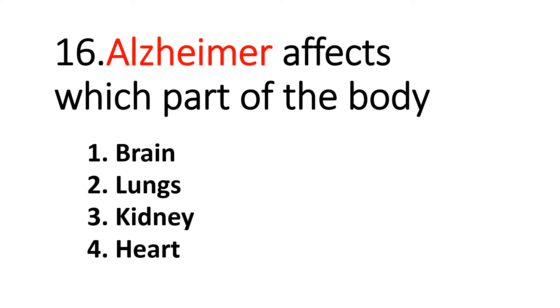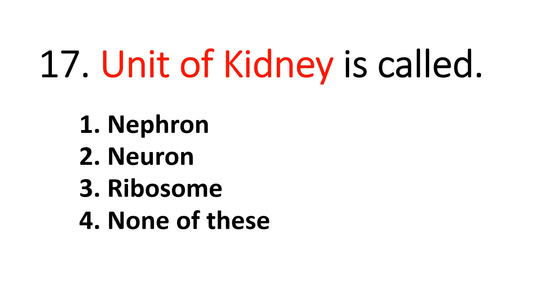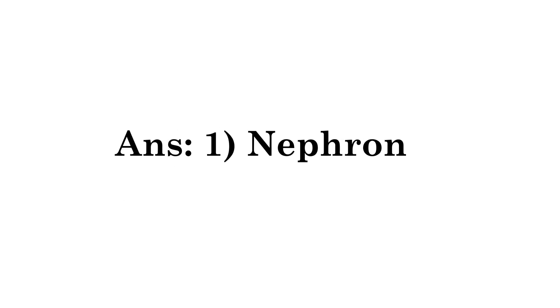Question number sixteen: Alzheimer's affects which part of the body? Answer: brain. Question number seventeen: The unit of kidney is called — answer: nephron.